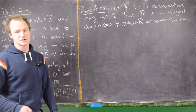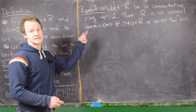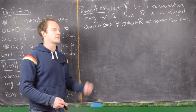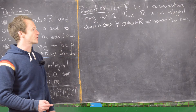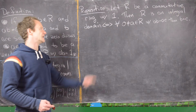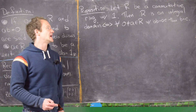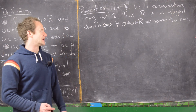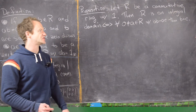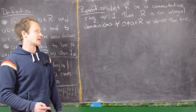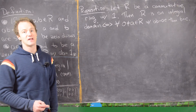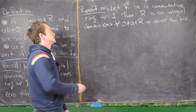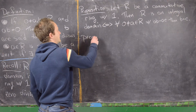The first result I want to prove is as follows. Let R be a commutative ring with 1. We want to prove that R is an integral domain if and only if for all nonzero A in R satisfying AB equals AC, that implies B equals C.